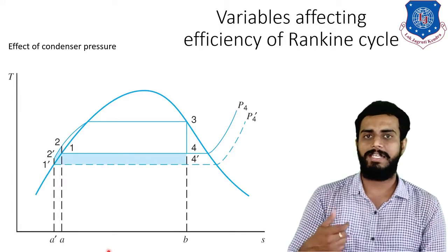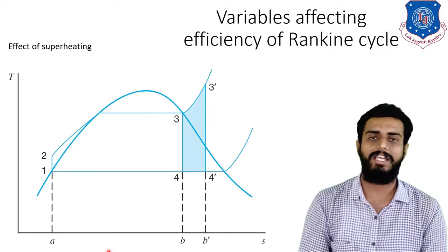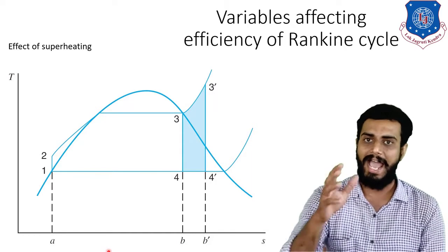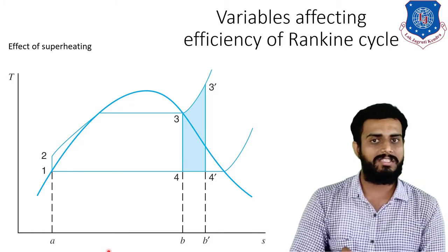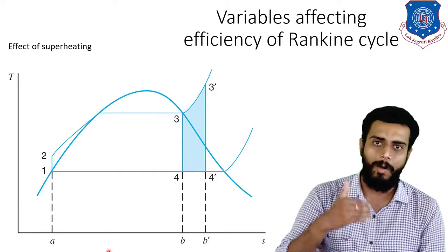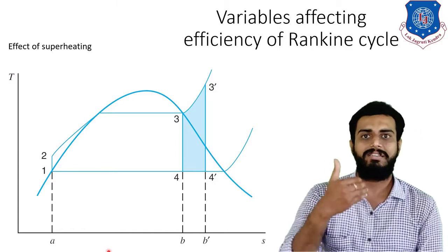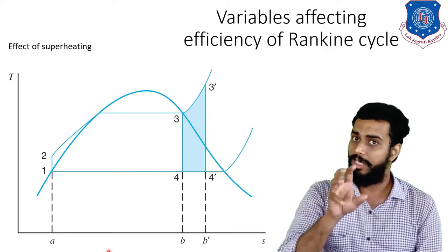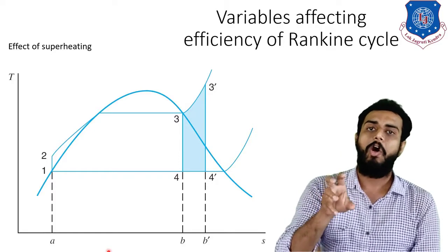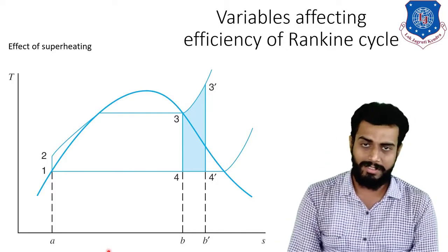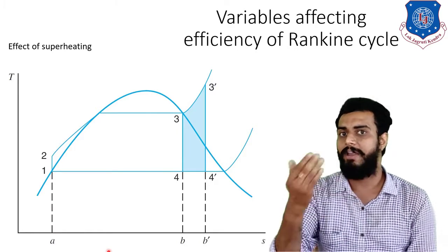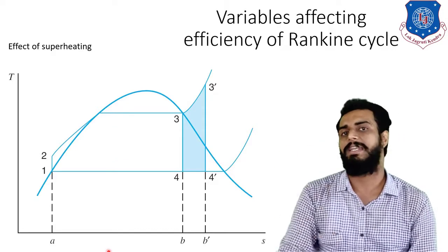The next effect is the effect of superheating. To understand the effect of superheating, we consider the diagram shown on screen. The original cycle is 1-2-3-4-1, and the modified superheated cycle is 1-2-3'-4'-1. The area 3-3'-4'-4 represents the increase in net work done. That increase in net work done will reflect in increasing the efficiency of the Rankine cycle.